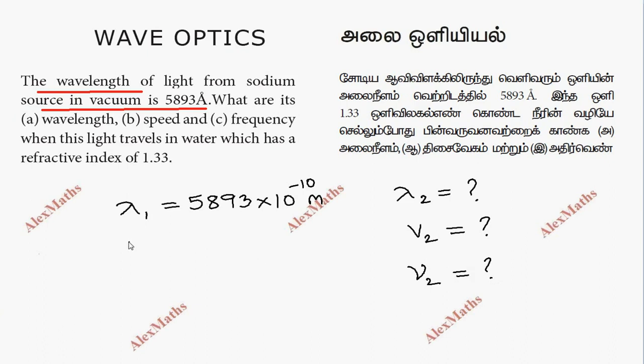v1 is the speed of light in vacuum, which is c equals 3 times 10 power 8 meters per second. n1 equals 1, and n2 equals 1.33, the refractive index of water.